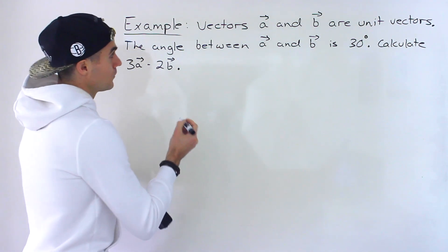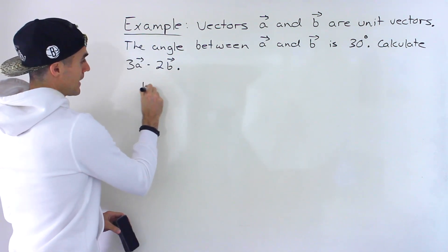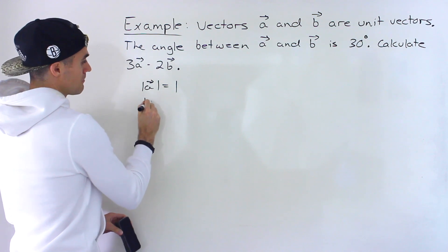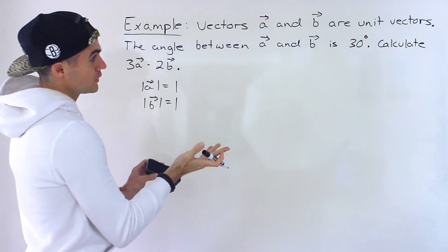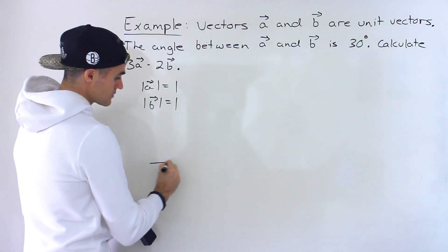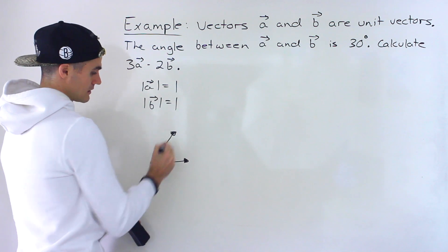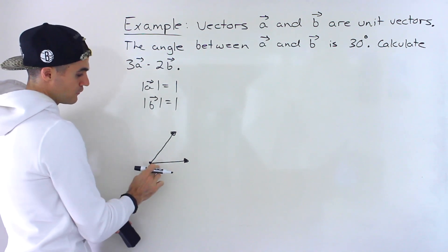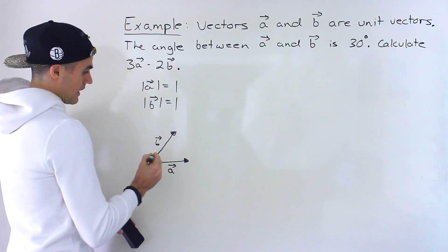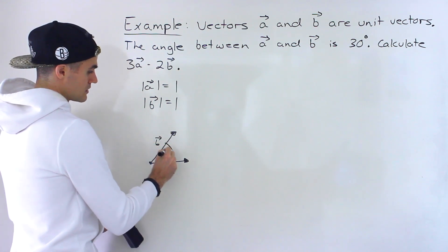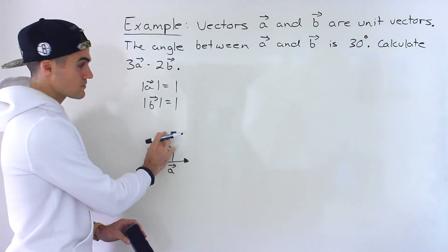A couple of things to note here. We're told that A and B are unit vectors, so what does that mean? That means the magnitude of A is 1 and the magnitude of B is equal to 1. We're also told the angle between them is 30 degrees. How you measure an angle between two vectors is when both vectors are connected at the tails — so you connect both vectors at the tails. We can let this be A, we'll let this be B, and then this angle ends up being 30 degrees. This has a magnitude of 1 and this has a magnitude of 1.